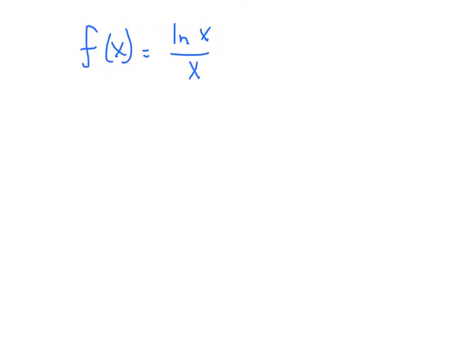So we're going to use the quotient rule, and our trick is to assign the numerator to u, so u equals log x. And then we compute the derivative, u prime of x, which is 1 over x.